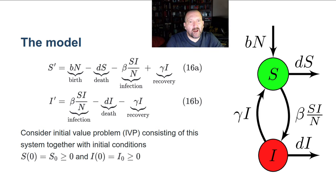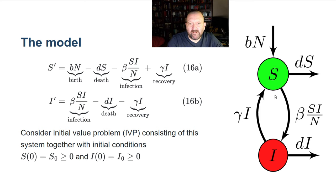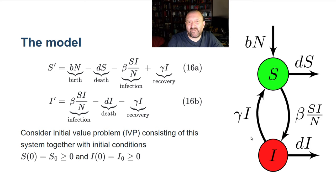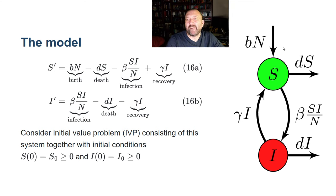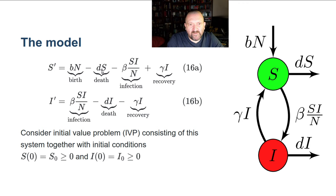The flow diagram shows birth, death, infection, and recovery. Individuals in the I compartment face competing risks — they can die or recover. This was not present in the Kermack-McKendrick model. The model equations are: S′ = DN − β·S·I/N − DS + γI and I′ = β·S·I/N − (D+γ)I. These are the mathematical expression of the flow diagram — flow diagrams are very useful and convey essentially as much information as the equations themselves.